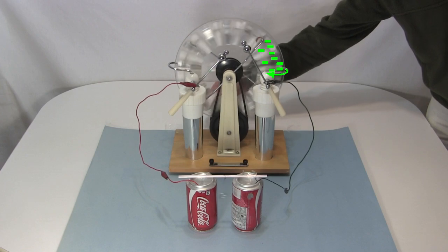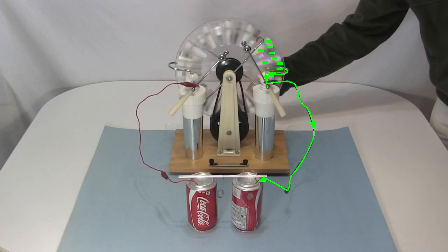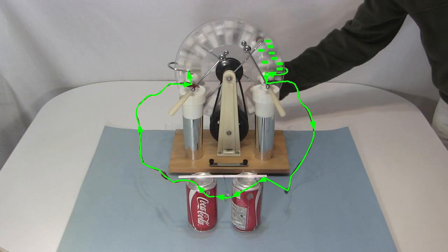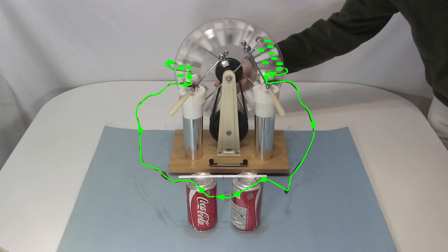The electrons move to this collector, along this bar, and to the can. There they move from can to can via the tab. They then return to the disk via this other bar and collector. One last note.